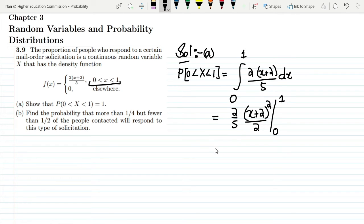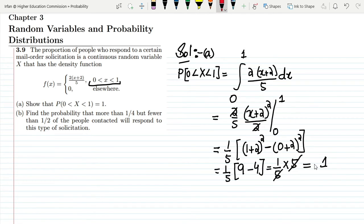This would be 1/5, and writing the ranges: (1 + 2)² minus (0 + 2)². This equals 1/5 times (9 - 4), which is 1/5 times 5. These cancel out and at the end we get 1, which is the required result. Hence it is proved that the probability ranges from 0 to 1 equals 1.